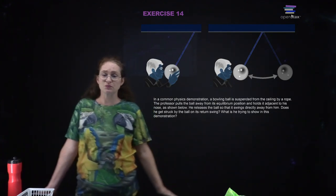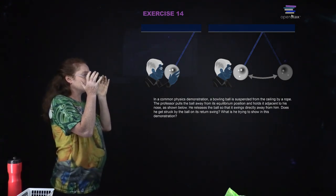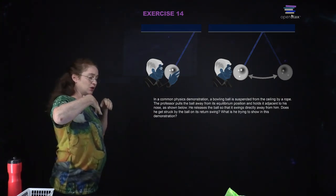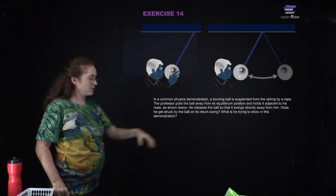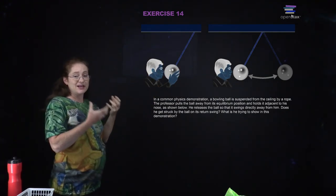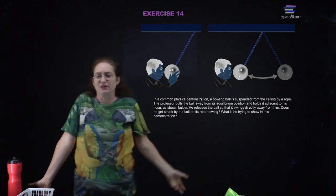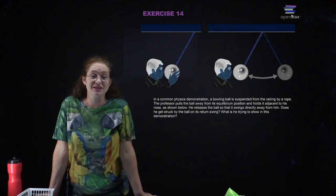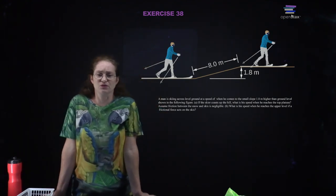In a common physics demonstration, a professor pulls a bowling ball up to his nose, touches it, and lets it go. The bowling ball swings down, gets faster and faster, goes up on the other side and comes back, but it doesn't gain any energy. So it will stop exactly where it started — or actually a little bit further from his nose because there are some losses. Does he get struck by the ball on its return swing? Not unless someone pushes it. That's all because of conservation of energy.